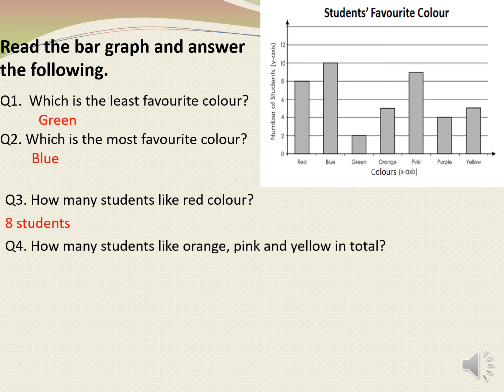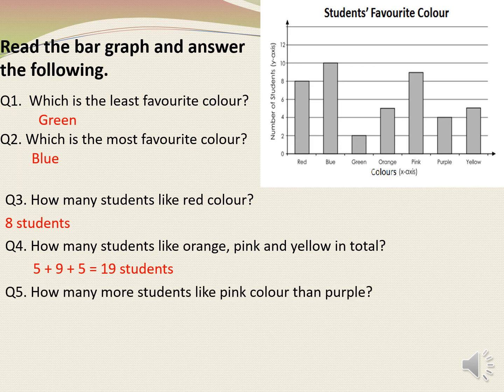Next question: how many students like orange, pink and yellow in total? In total means to add. So we are going to add the number of students who like orange, pink and yellow. The number of students who like orange is 5, pink is 9 and yellow is 5. Therefore, 5 plus 9 plus 5 is equal to 19 students. Next question: how many more students like pink colour than purple? Here we are comparing, so we need to do subtraction. The pink colour is liked by 9 students and purple by 4. Therefore, 9 minus 4 is equal to 5 students.